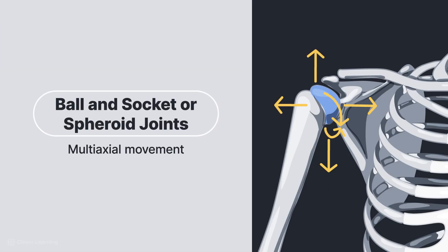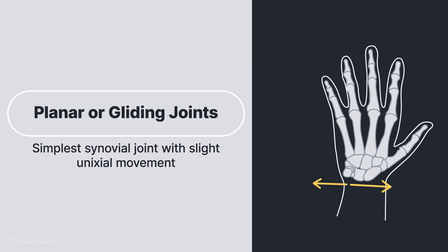Ball and socket, or spheroid joints, provide multiaxial movement including flexion-extension, abduction-adduction, circumduction, and rotation. The round head of one bone rests in the cup-shaped depression of the other bone. Examples include the hip and shoulder joints. Planar, or gliding joints, are the simplest synovial joint with slight uniaxial movement. They have flattened or slightly curved surfaces. Examples include intercarpal and intertarsal joints of the wrist and foot.